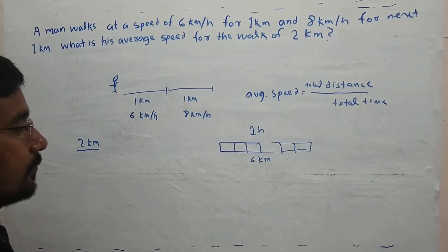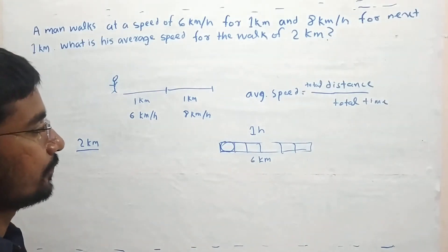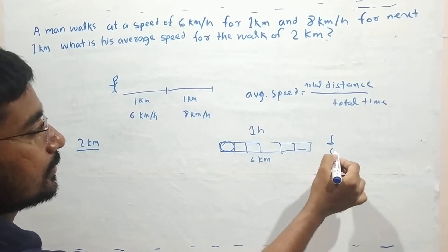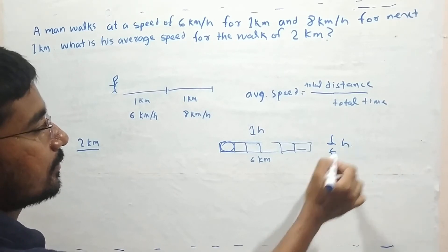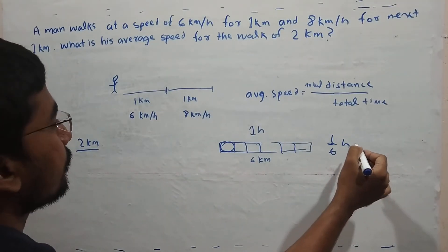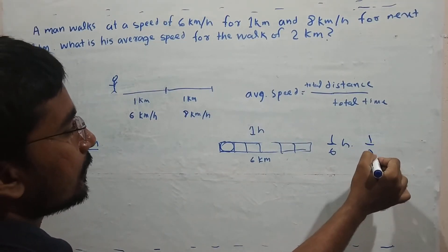So 1 km will take 1/6 hour. And at 8 km per hour, 1 km will take 1/8 hour.